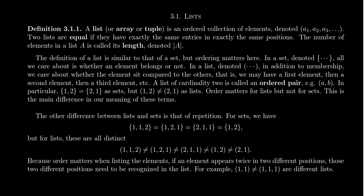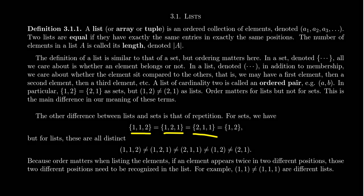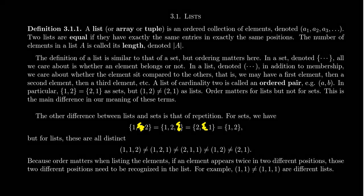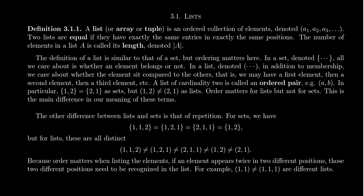When you're thinking about sets, the set {1, 1, 2} is the same thing as {1, 2, 1}, which is the same as {2, 1, 1}, which is the same as {1, 2} — because order doesn't matter and repetitions are ignored. But for a list, those are all distinct. The list (1, 1, 2) is a different list than (1, 2, 1) because, if you consider the second position, one list has a 1 there and the other has a 2. For lists, every four of those representations are all distinct.